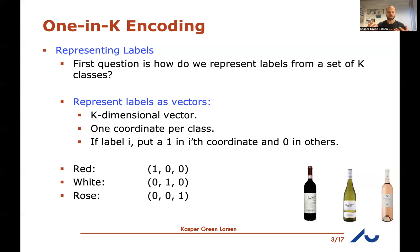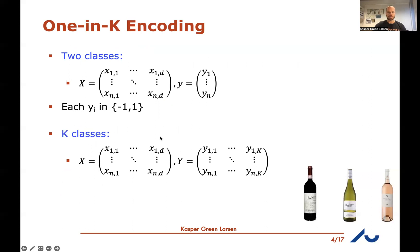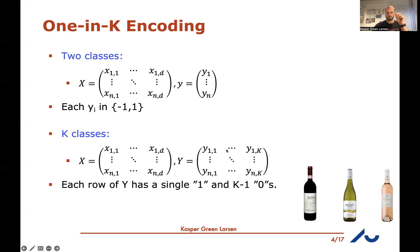For example, red wine is represented as [1, 0, 0], white wine as [0, 1, 0], and rosé as [0, 0, 1]. With one-in-K encoding, the vector of labels becomes a matrix: one row per training example, each row a K-dimensional vector with a single one indicating the class and zeros elsewhere.